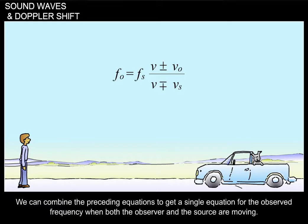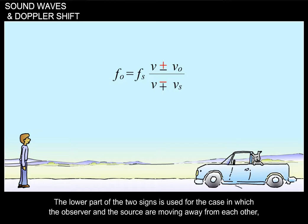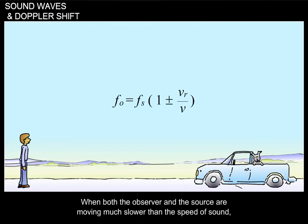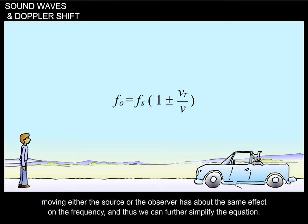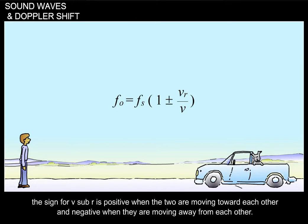We can combine the preceding equations to get a single equation for the observed frequency when both the observer and the source are moving. F sub S is the frequency of the source at rest, V the sound's speed, V sub O the velocity of the observer, and V sub S the velocity of the source. The lower signs are used when the observer and source are moving away from each other, and the upper signs when they are moving toward each other. When both are moving much slower than the speed of sound, moving either the source or the observer has about the same effect on frequency, and we can simplify the equation. Here, V sub R is the speed at which the observer and source are moving toward or away from each other — positive when approaching, negative when receding.